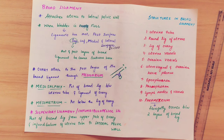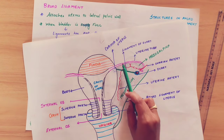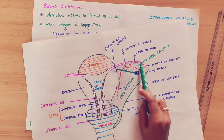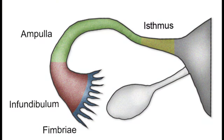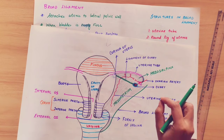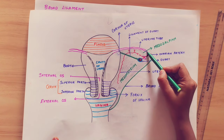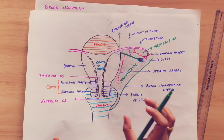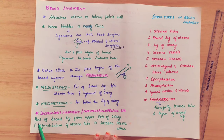There is also the suspensory ligament, also called the infundibulopelvic ligament. The fallopian tube has four parts: isthmus, ampulla, infundibulum, and the finger-like projections called fimbriae. The infundibulum connects to the pelvic wall, and this connection is called the suspensory ligament or infundibulopelvic ligament — extending from the upper pole of the ovary and infundibulum of the uterine tube to the lateral pelvic wall.